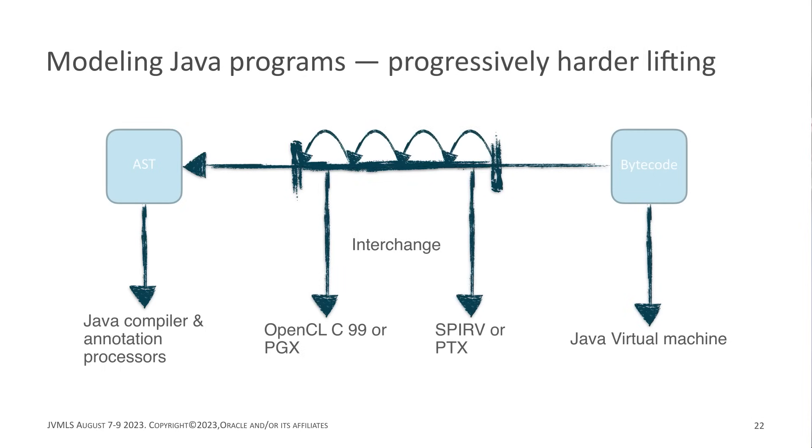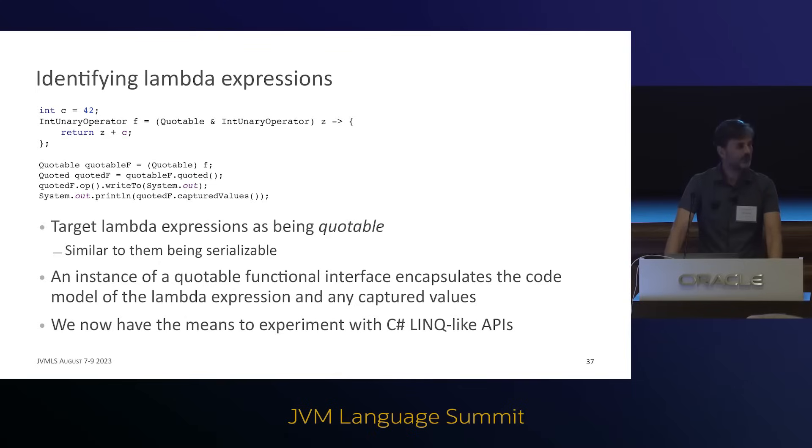That would allow libraries to implement a wide variety of language interpretations based on Java — from math, to machine learning, to LINQ. I think we can do better than LINQ. Okay, maybe even better than LINQ — but importantly, also GPGPU: general-purpose computing on a GPU. Let's have a look.